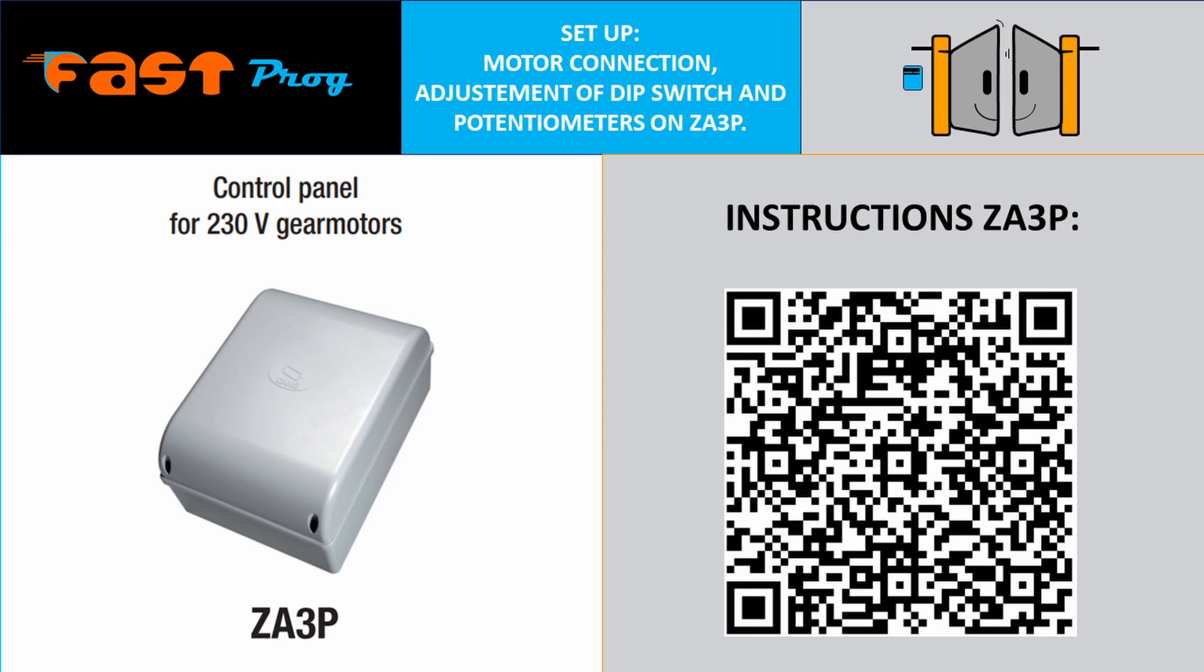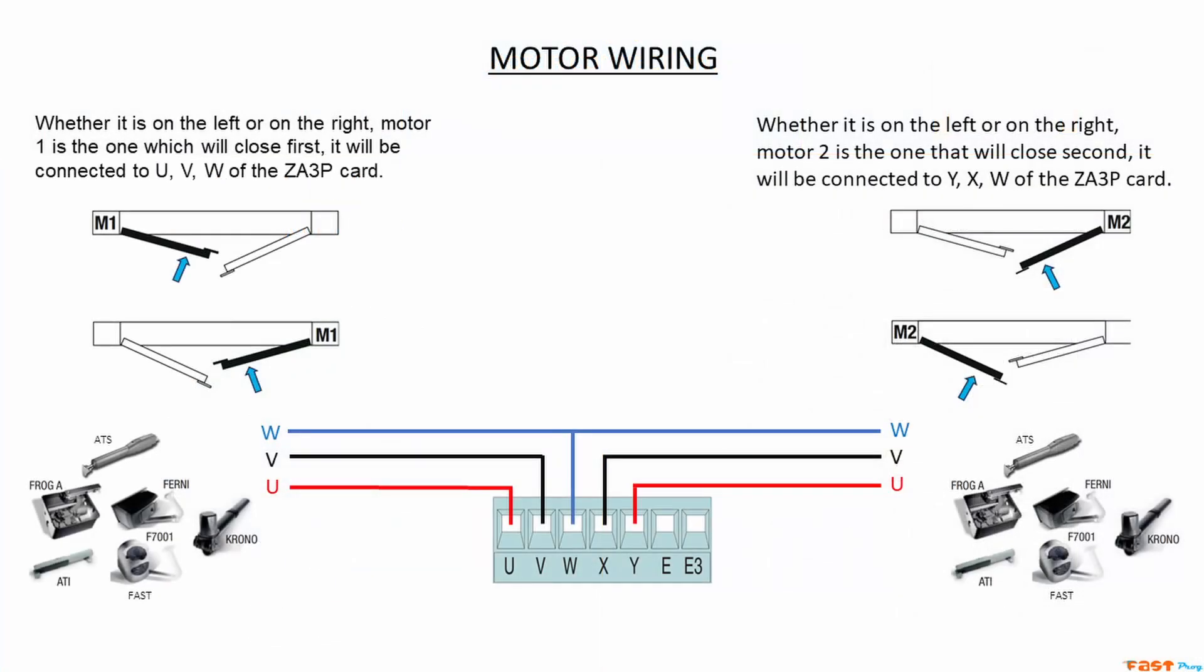Let's see how to connect your motors without any hassle. Whether the motor is on the right or left side doesn't matter, just make sure to connect the wires of the motor that should close first, called motor 1, to the UVW terminals on the ZA3P board.